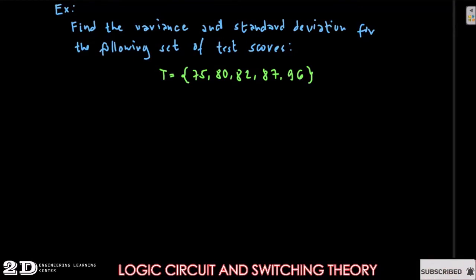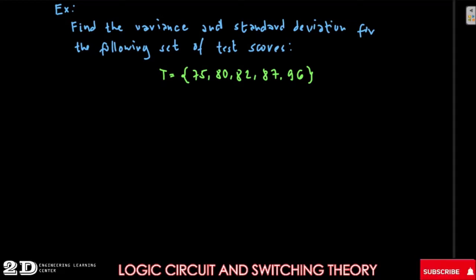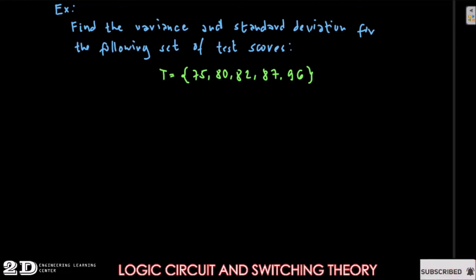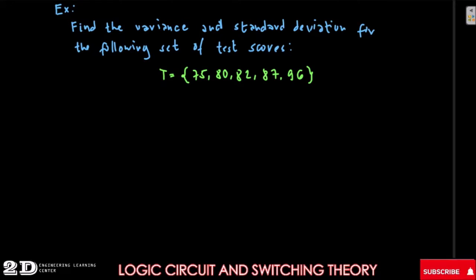We will have an example on how to find the variance and the standard deviation for ungrouped data. For this discussion, we will consider data that is 30 or below as ungrouped data. If it is more than 30, we will group them by presenting them in a frequency distribution table. So this is the example: find the variance and the standard deviation for the following set of test scores.